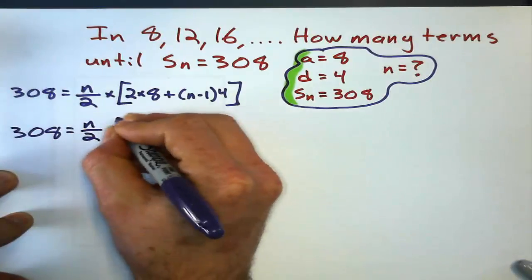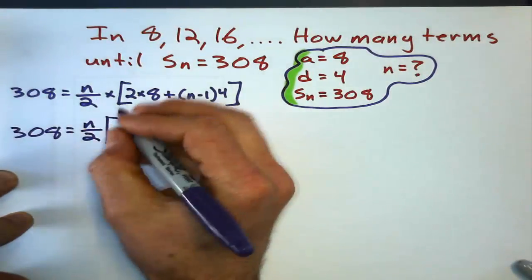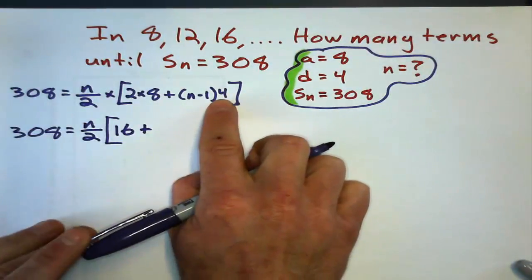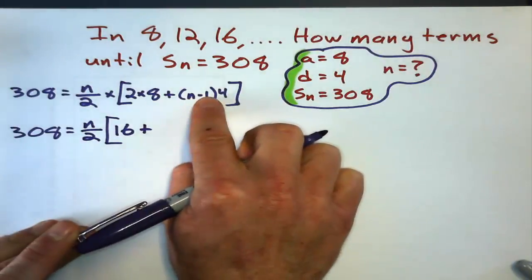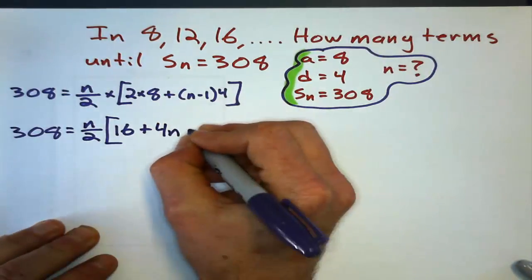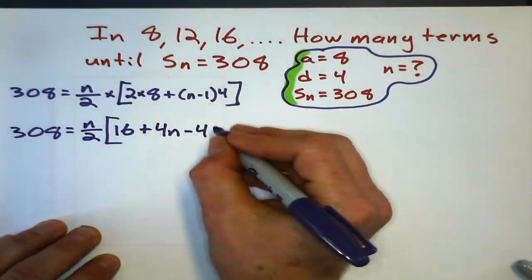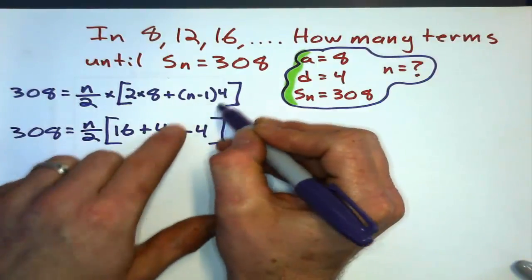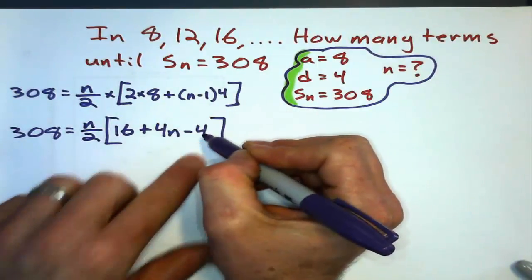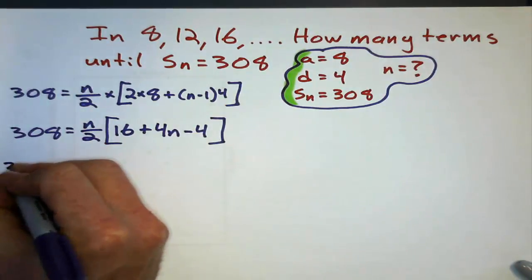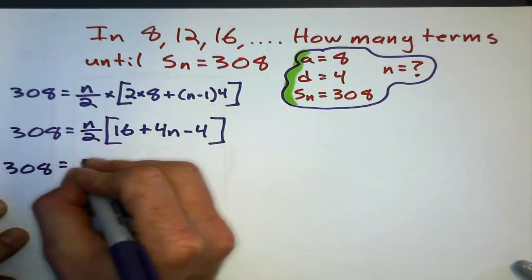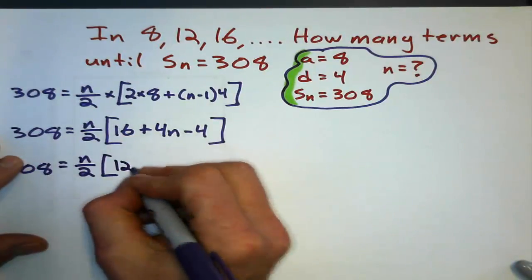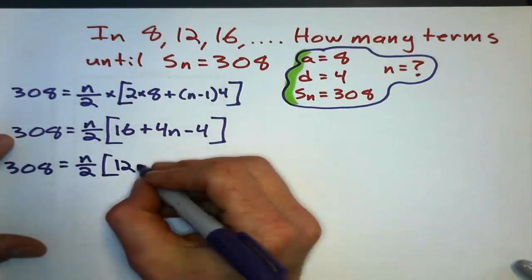Now that I substitute all that into the formula, I'm going to simplify what's inside the brackets first. 308 equals n over 2. 2 times 8 is 16, plus — I'm going to take that 4 and multiply it through the brackets — so I get 4n minus 4. 4 times n is 4n, 4 times minus 1 is minus 4.